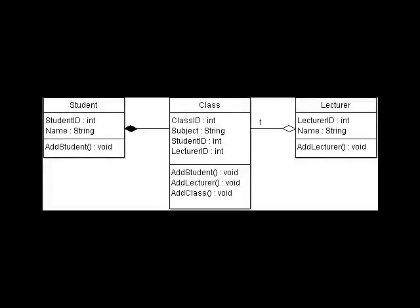The first thing that everybody wants to do when they start programming is to sit down and write some code. But in the case of object-oriented programming, that would be a real disaster. You have to sit down and decide on exactly what you want to do first. So in this simple case, I've got a programme where I'm going to use some students in a class with a lecturer, maybe a timetabling system. So student, class and lecturer become my objects.